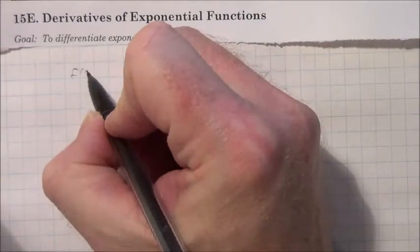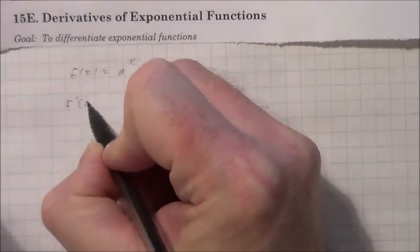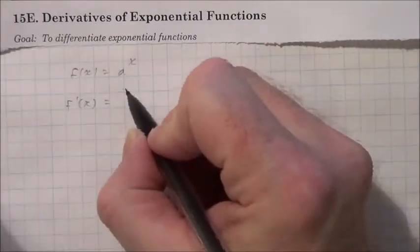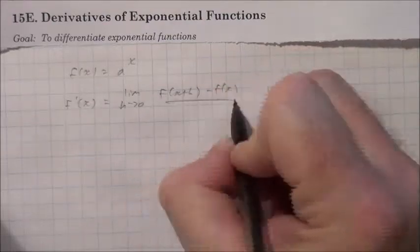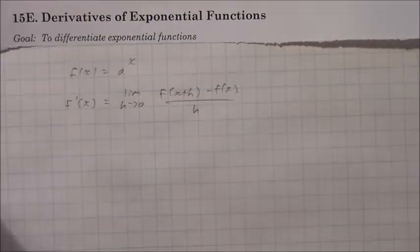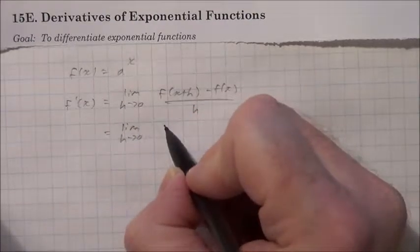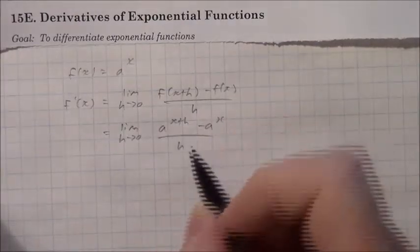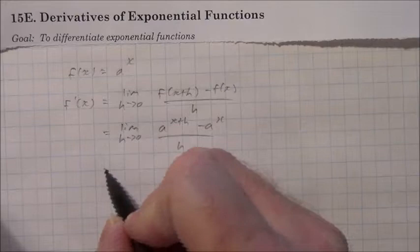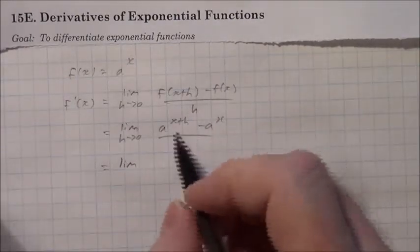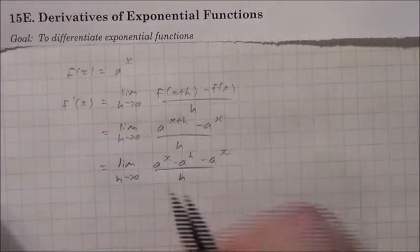Let's say, for example, that f of x is an exponential function a to the power of x. If we use first principles to differentiate this, we'll take f prime of x, which is the limit of f of x plus h minus f of x all over h as h approaches 0. We know the function is a to the x, so it's going to be the limit of a to the x plus h minus a to the x all over h as h approaches 0.